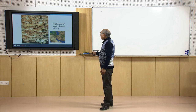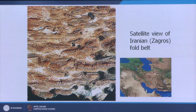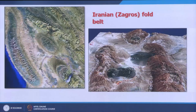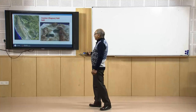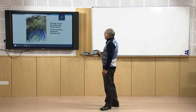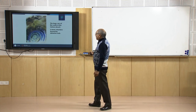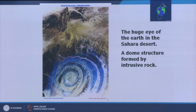The Zagros mountain fold belt of Iran shows many plunging anticlines and synclines that also have the potential for oil and gas. High-resolution 3D perspective views of the Zagros field provide a better idea of the landforms and possible subsurface natural resources. Dome structures are also useful for certain kinds of natural resources.